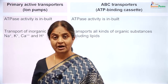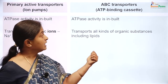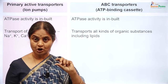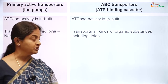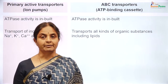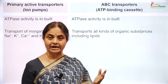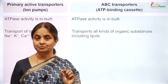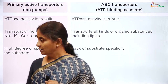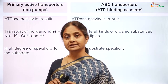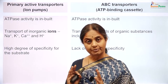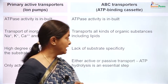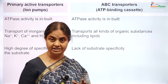While ion pumps are specific for certain ions, ABC transporters — where ABC stands for ATP Binding Cassette, a common motif in all these transporters — can transport a variety of substances: organic anions, cations, and sometimes even inorganic ions. Ion pumps have a high degree of specificity; for example, proton pumps will pump only protons and calcium pumps only transport calcium ions. ABC transporters lack substrate specificity.